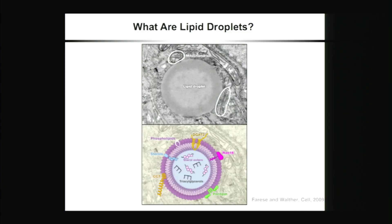Lipid droplets are very dynamic cellular organelles involved in the storage of fat. They are composed of a core of neutral lipids—mainly triglycerides—surrounded by a monolayer of phospholipids, and they can often be found in close association with the ER, from where they emerge.